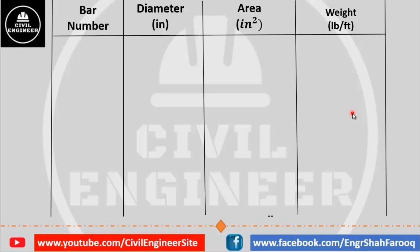According to this classification, the bars are identified by bar numbers. The first, or thinnest, bar used for construction is the number three bar. According to ASTM classification, the number represents the diameter of the bar in eighths — that is, one over eight parts of an inch. So the diameter of number three bar is three-eighths of an inch, or 0.375 inches.